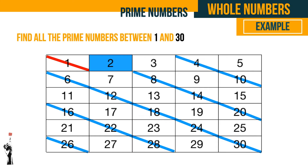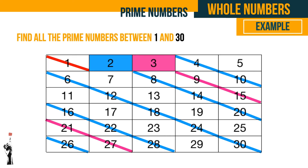Next we move on to the number three. We leave three alone but scratch out every multiple of three: six — already scratched out — nine, twelve, fifteen, eighteen, twenty-one, twenty-four, twenty-seven, and thirty.